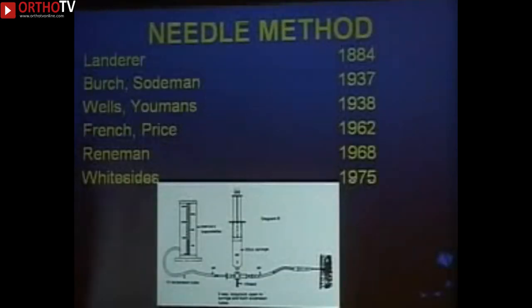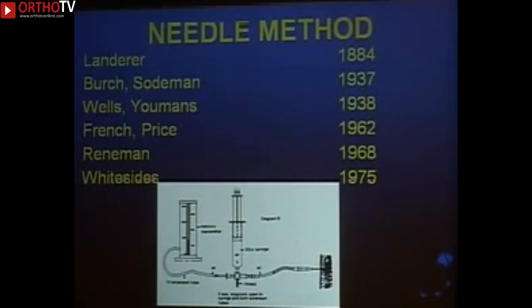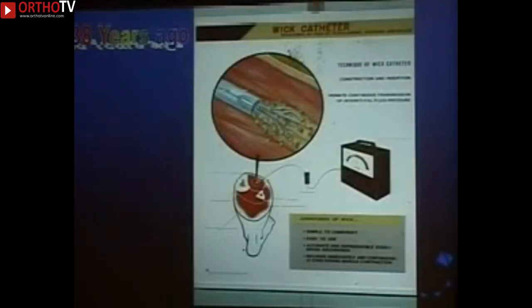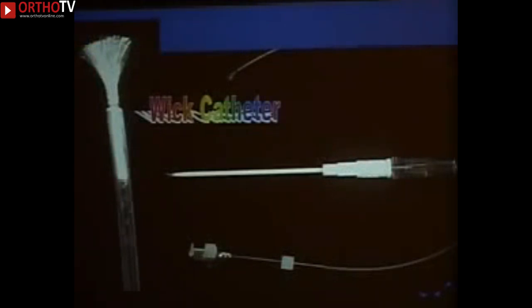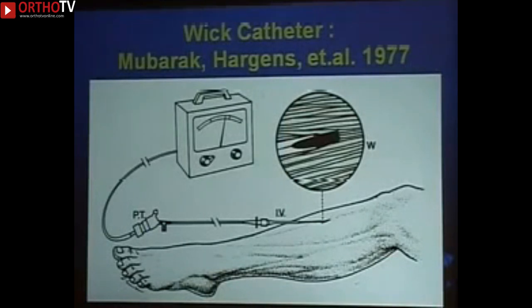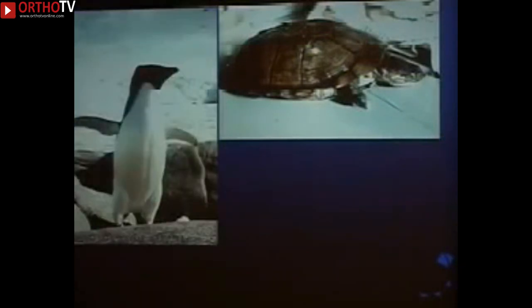Pressure is the earliest finding and the first thing you must document, which is why pressure measurement evolved. Needle tests date back to the 1800s; Whitesides popularized them in the 1970s, but I found them inaccurate. About 38 years ago I found the wick catheter developed by Scholander and Hargens — Hargens was a recent PhD graduate who helped me put together the clinical wick catheter. The wick, a piece of suture pulled into the catheter tip, spread surface tension so intramuscular fluid was in continuity with fluid in the tube, connected to a pressure transducer. Hargens was originally using it to study pressure in turtles, penguins in Antarctica, crocodiles, boa constrictors, and salmon.